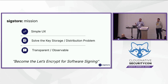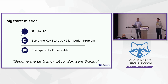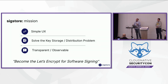Sigstore came around, and the North Star was simple UX. We needed to solve the issue of key storage, mapping it to an identity, and how to distribute that. It needed to be transparent and observable — you can't really be facilitating behind-closed-doors signing operations. That's why we selected a technology called a transparency log as one of the first projects we built. We came up with the adage of 'become the Let's Encrypt for software signing.' This was the message that really resonated with people.